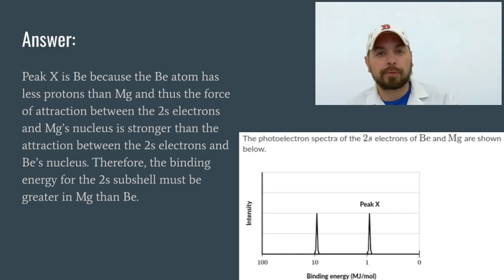Magnesium has more protons. Therefore, the attractive force of those 2s electrons is going to be greater in magnesium than it is in the beryllium because of the protons. And again, it's because of the fact that we are dealing with the same two electrons, the 2s electrons in both of these atoms. That's an important thing to remember.